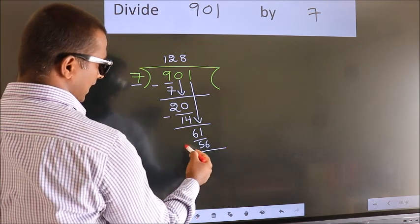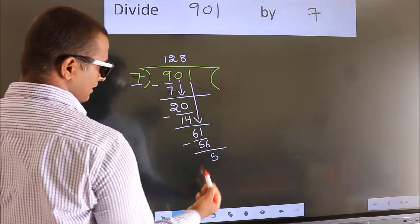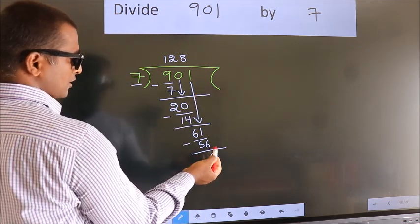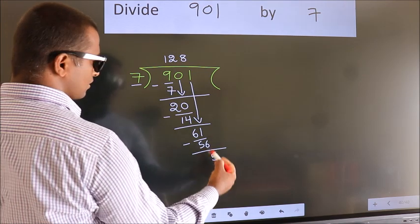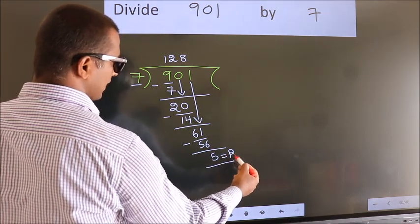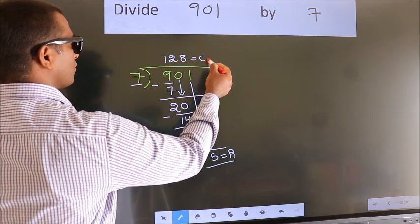Now we subtract, we get 5. No more numbers to bring it down, so we stop here. This is our remainder. This is our quotient.